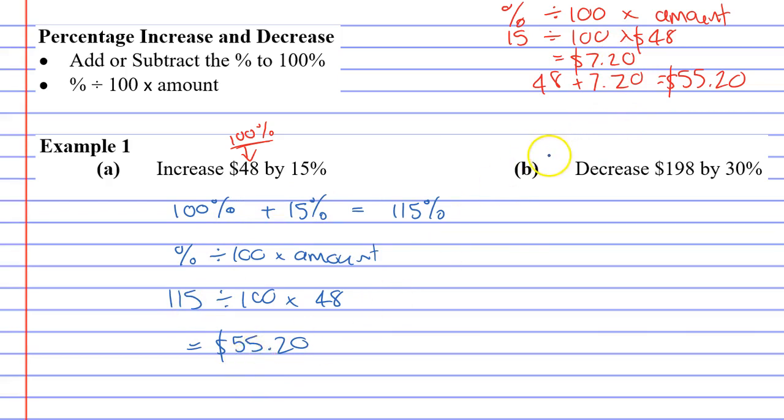So let's look at question B which is a little different. It's not increase, it's decrease. So last time you went 100% plus 15%. This time we're going 100% minus the percentage which in this case is 30%. That will give us 70%.